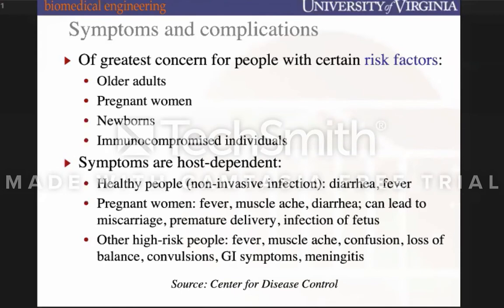Symptoms are host-dependent. In healthy people it leads to diarrhea and fever. In pregnant women, symptoms include fever, muscle aches, and diarrhea, but it can also lead to miscarriage, premature delivery, and infection of the fetus. In other high-risk people — newborns or older adults — you'll have fever, muscle aches, and confusion, but it can also lead to convulsions and meningitis. That's where it can become fatal in immunocompromised individuals.